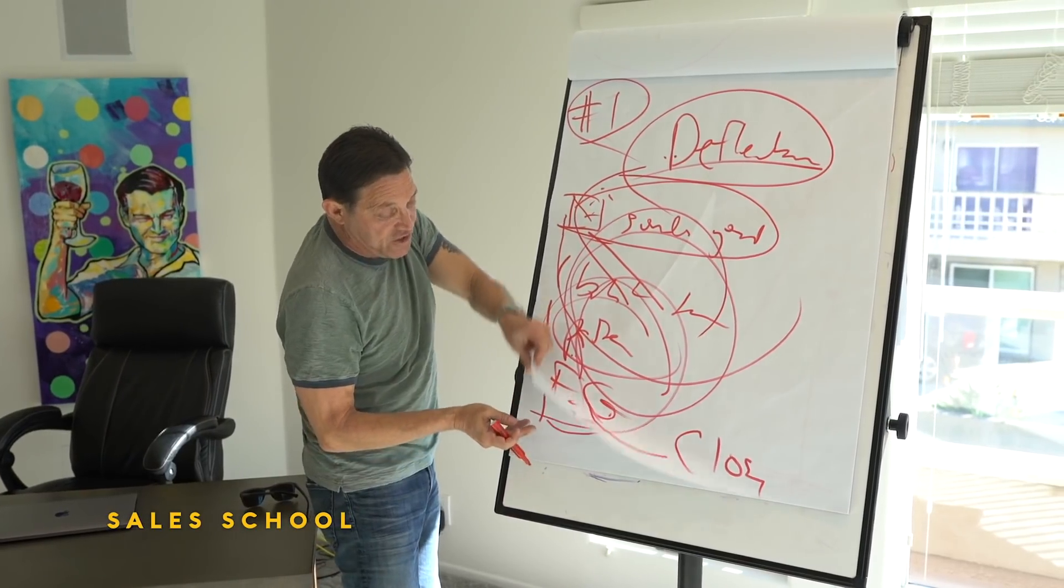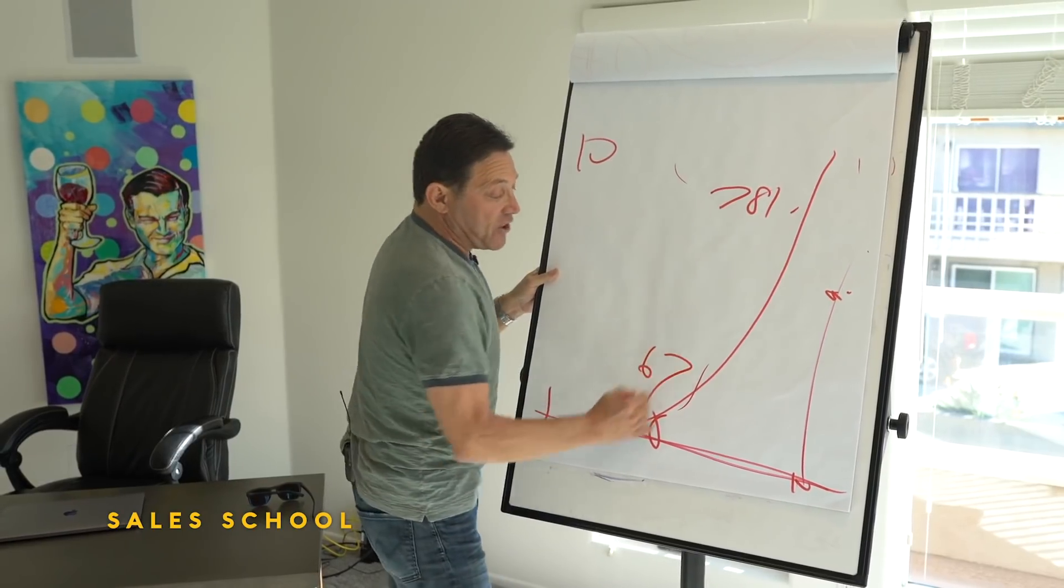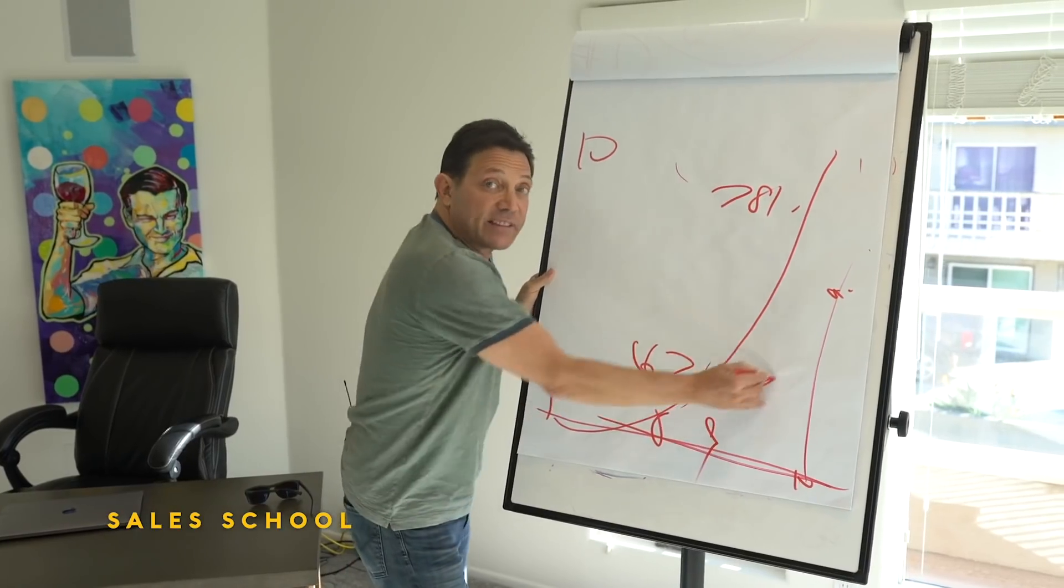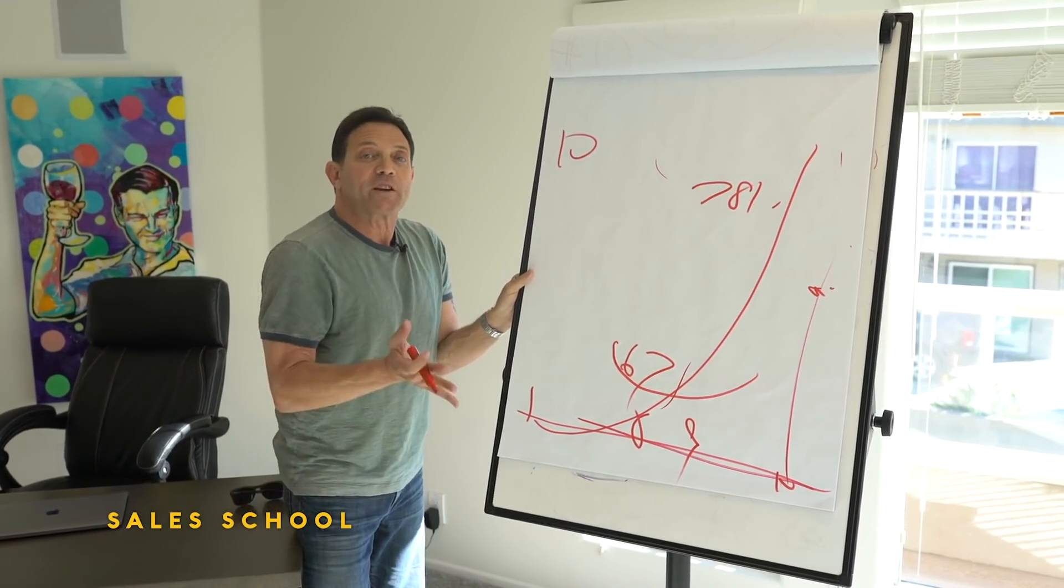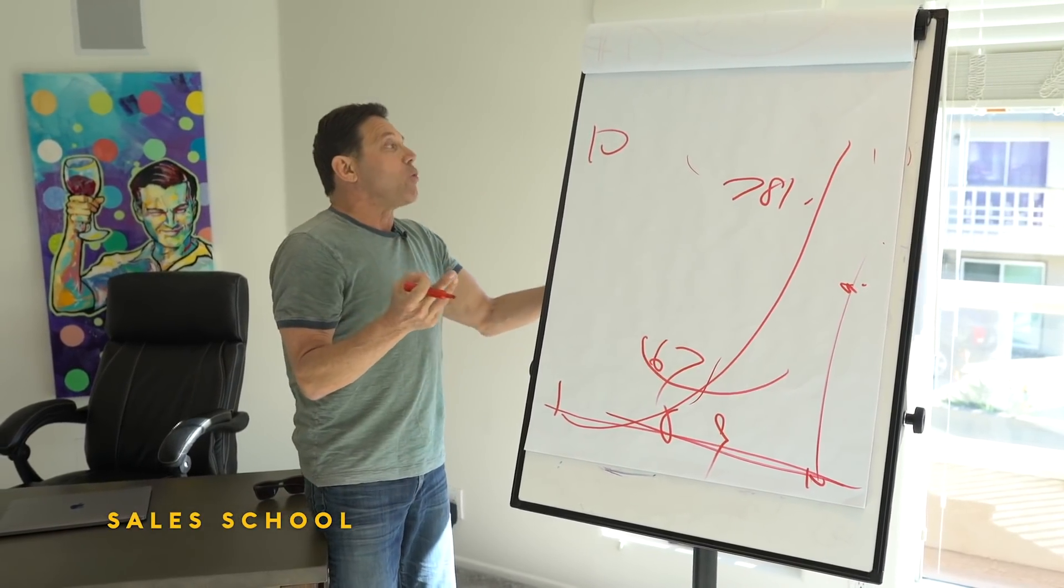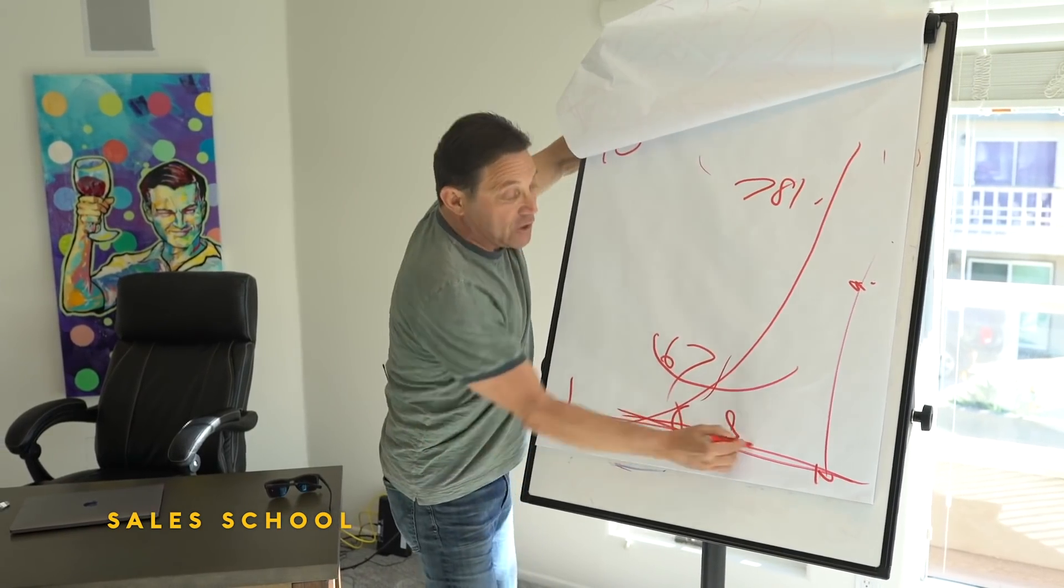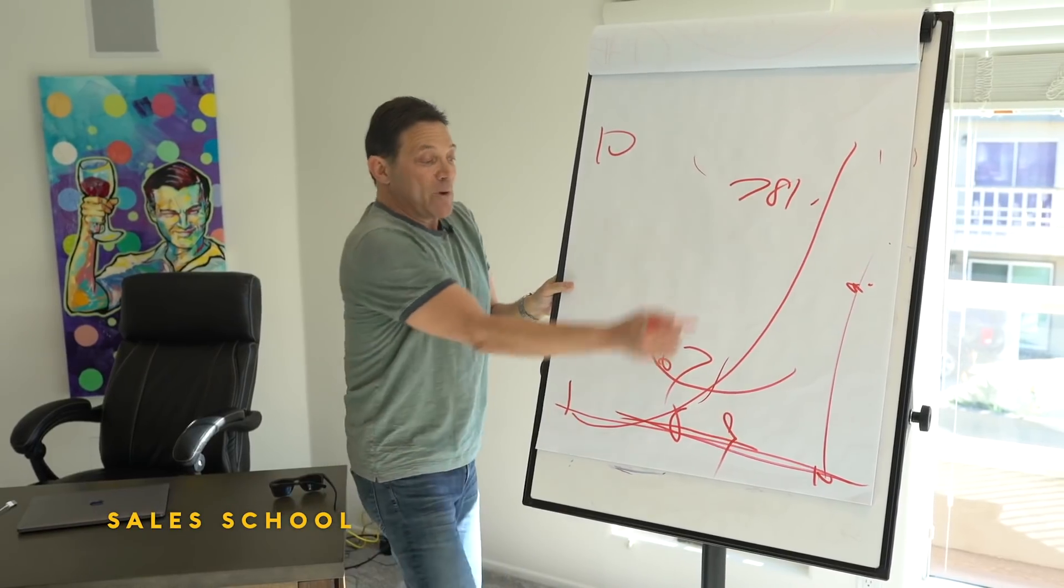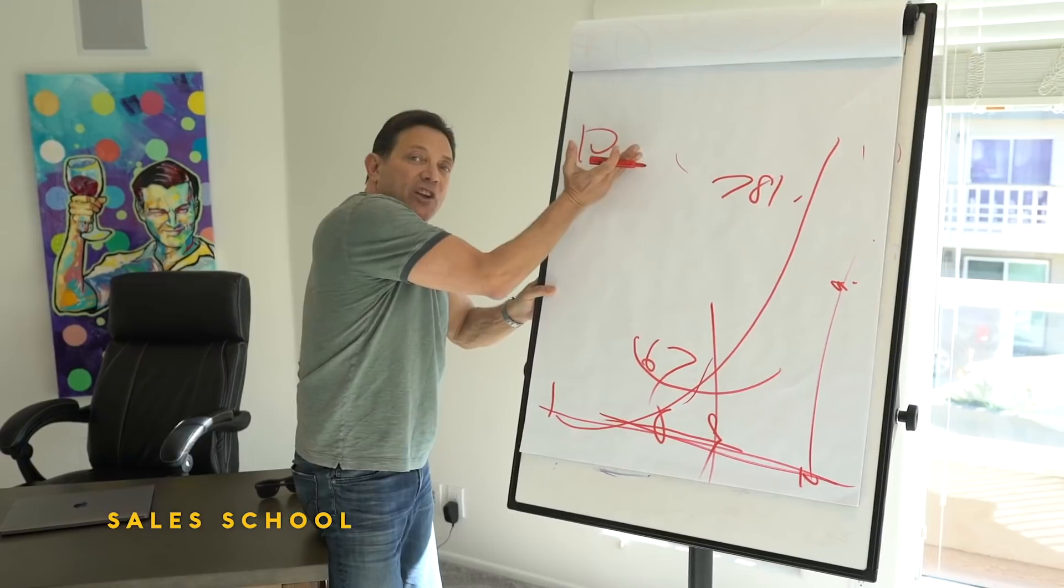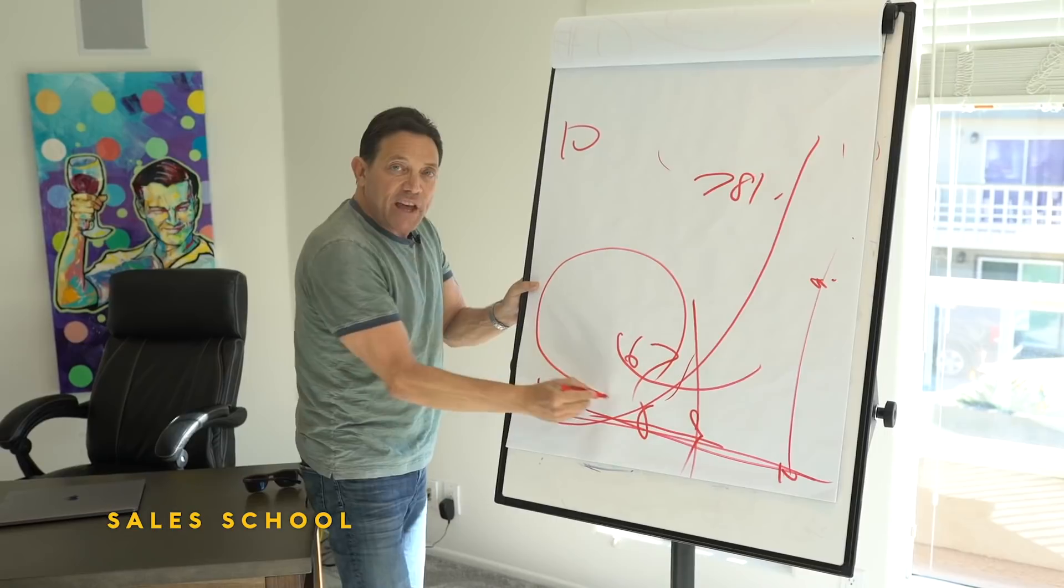Let's say that your initial presentation got someone to like a six or seven on the certainty scale, but they have a nine action threshold. You have to raise that level of certainty. There's no way they're going to buy unless they're more certain about all three tens. What we do is we run the loop to move them down the line to a higher level of certainty, and then we ask for the order again. We use the objection as an opportunity to loop back into presentation mode, rebuild more certainty, and ask for the order again.